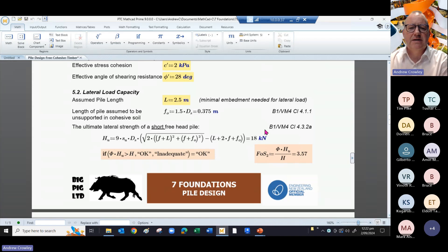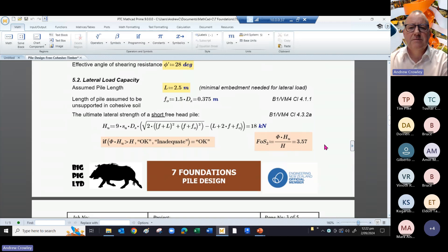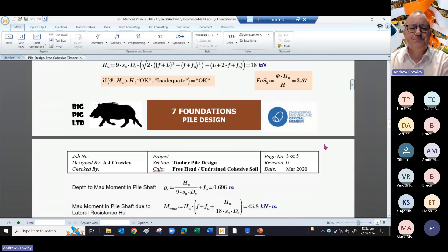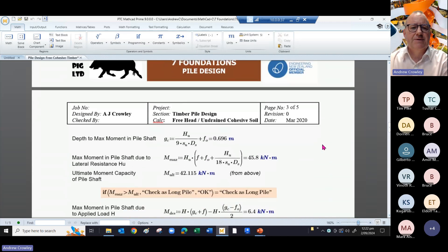This has a factor of safety of over three and a half. You might want to reduce the length of the pile in that case. But if we carry on, the depth to the maximum moment in the pile shaft is 0.69.